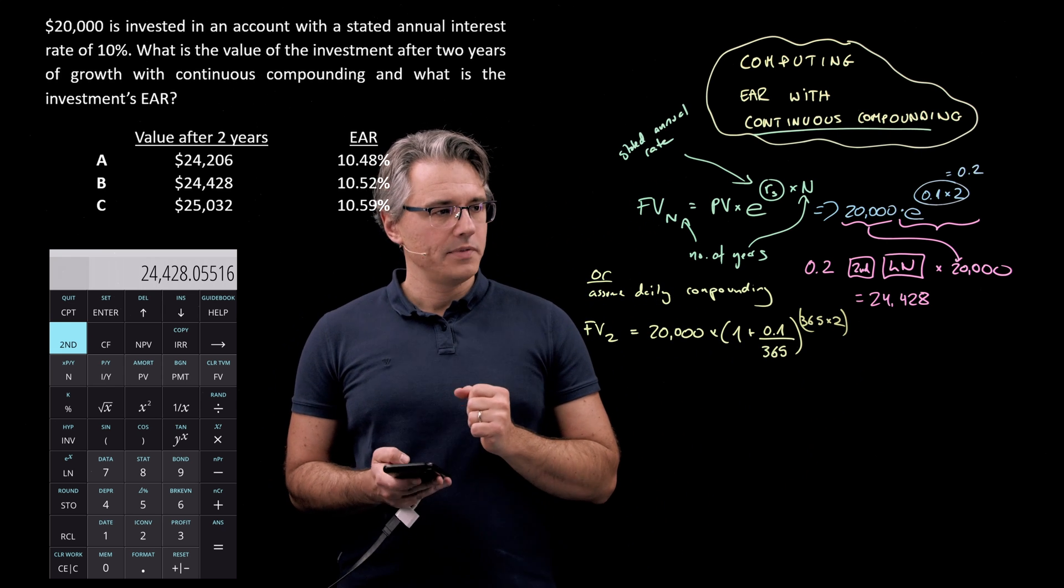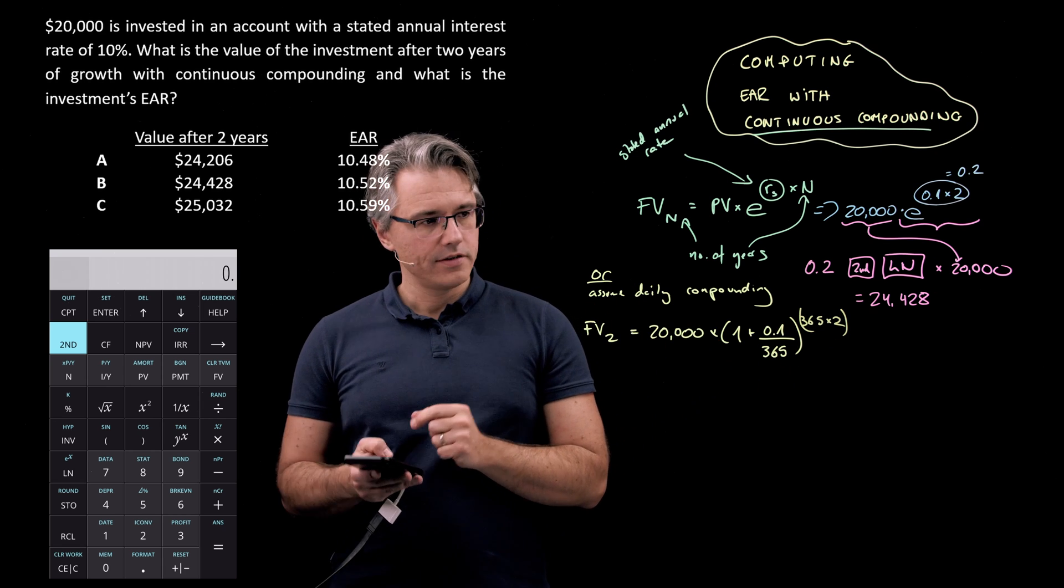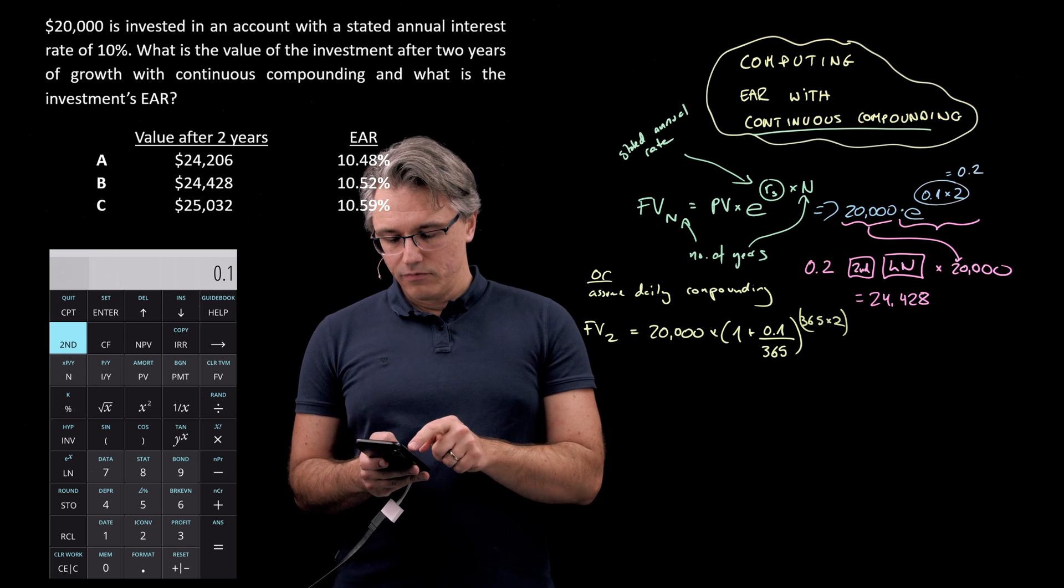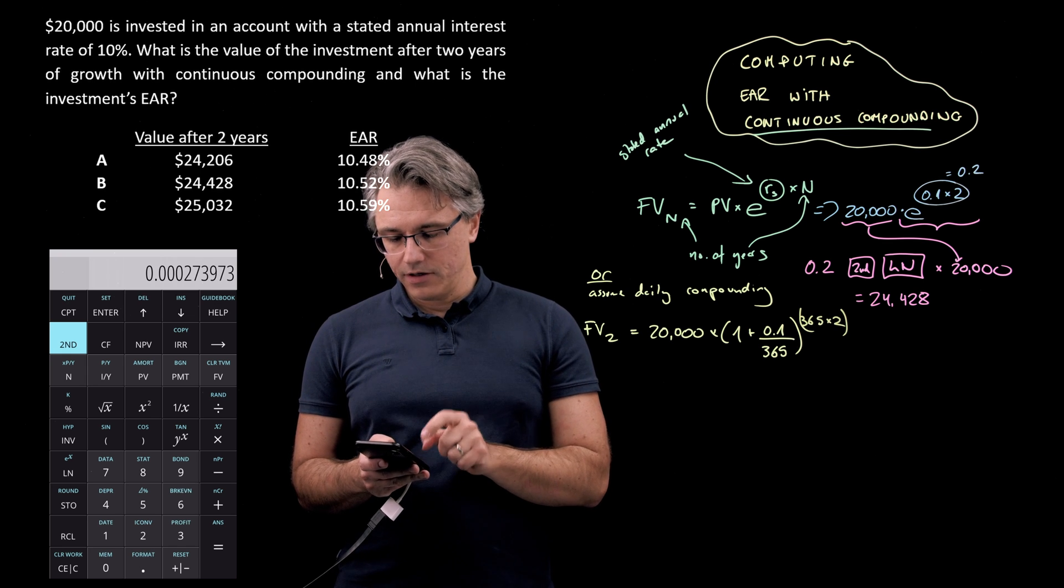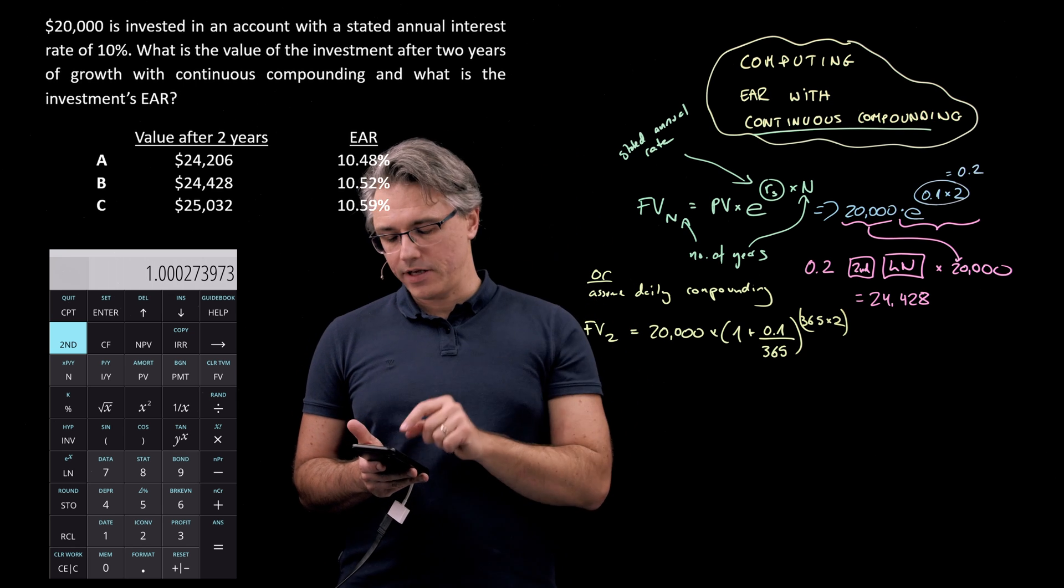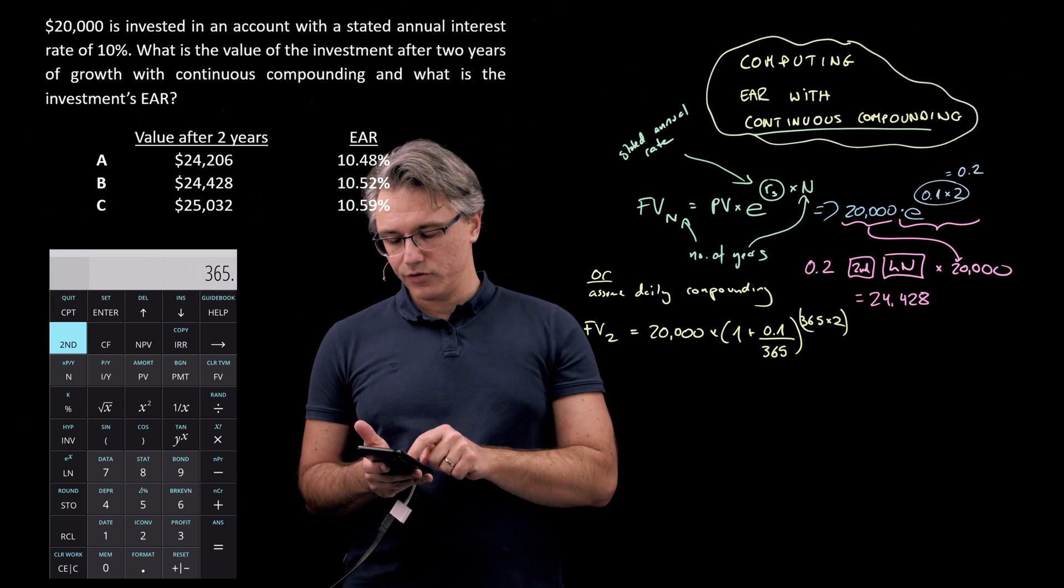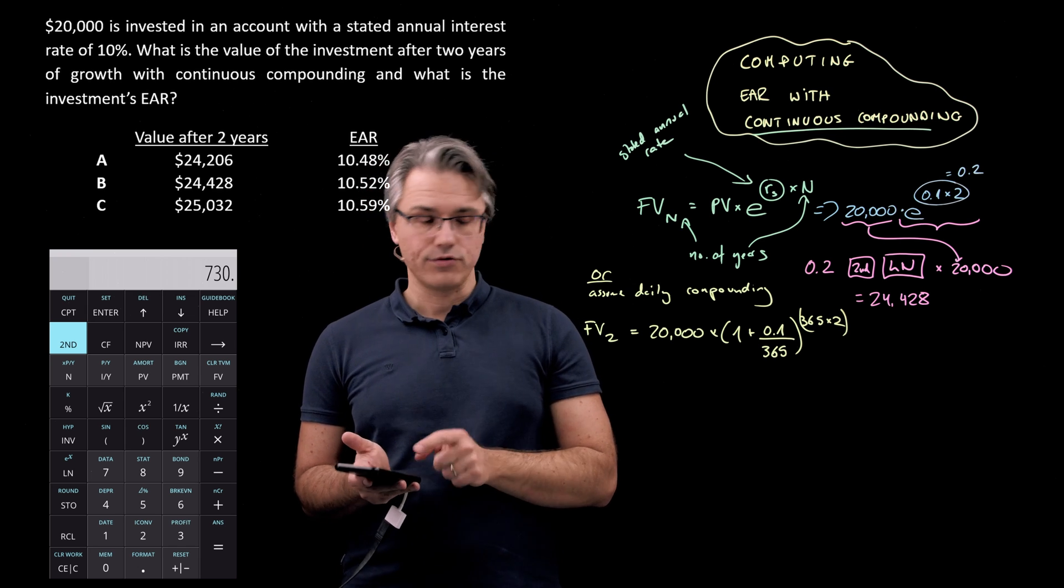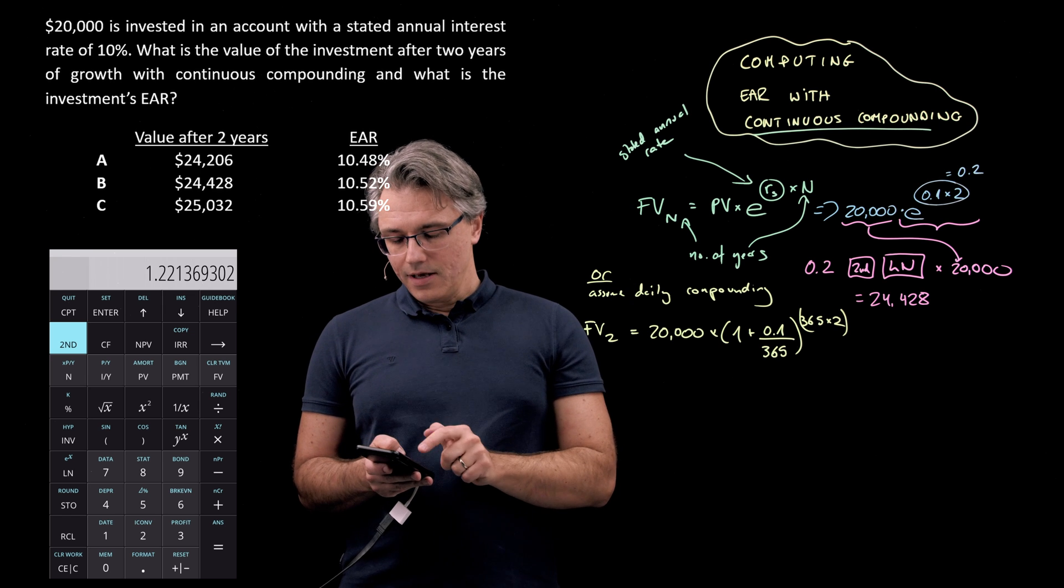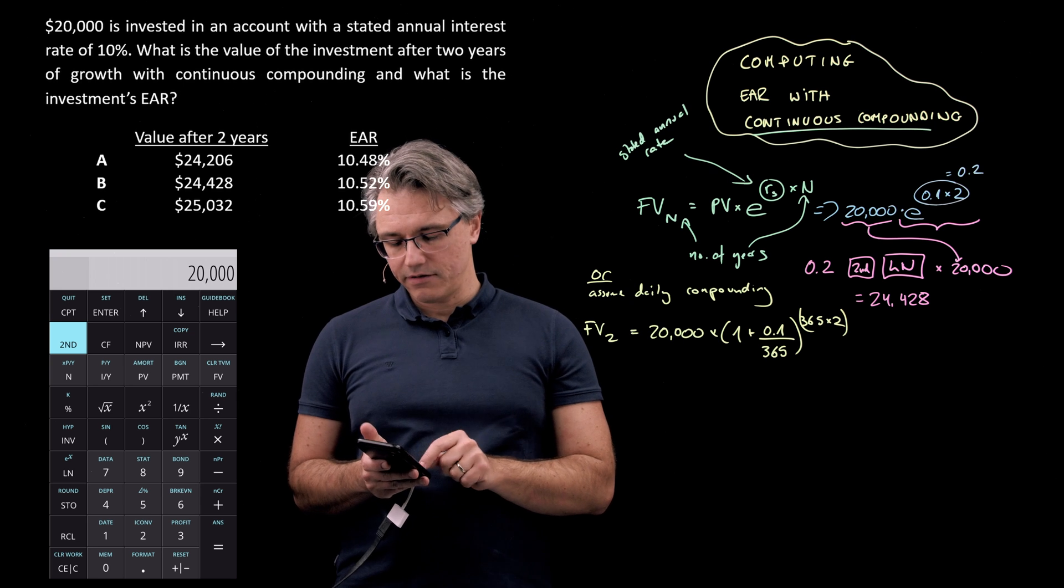Okay let's see what this would be. Let's do the brackets first and then multiply by twenty thousand. So 0.1 divided by 365 plus 1 raised to the power, so Y to the power of X, open bracket, 365 times 2, close bracket, 730 equals, and now multiply this by twenty thousand. The result's going to be very, very close. Yeah, it's twenty-four thousand four hundred twenty-seven.